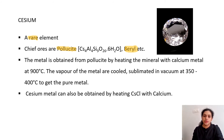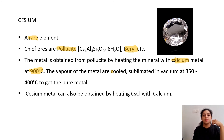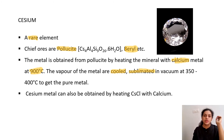Cesium is obtained in pure form by heating pollucite with calcium metal at 900°C. Cesium is easily vaporized, so cesium vapors come out and are cooled and sublimated for purification. Sublimation is the process where a solid directly enters vapor state without going through the liquid state. Cesium is sublimated in vacuum at 350–400°C to get the pure cesium metal.